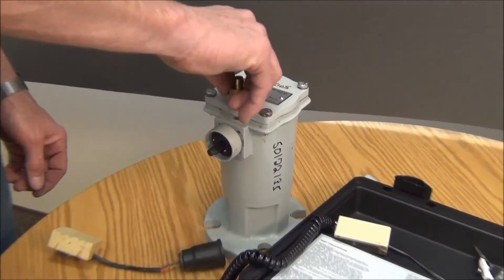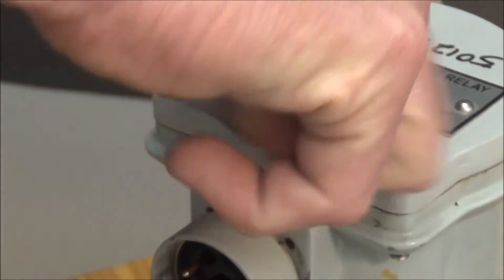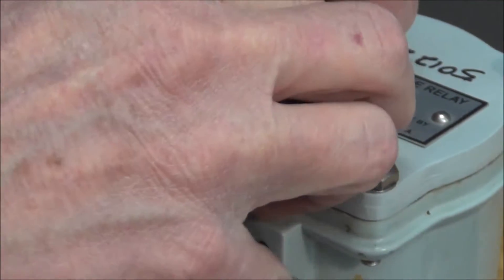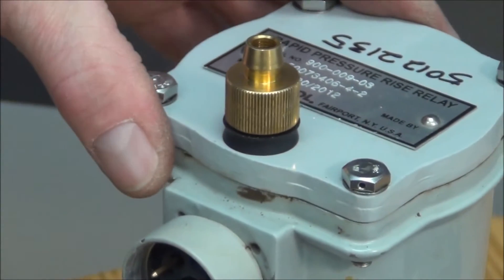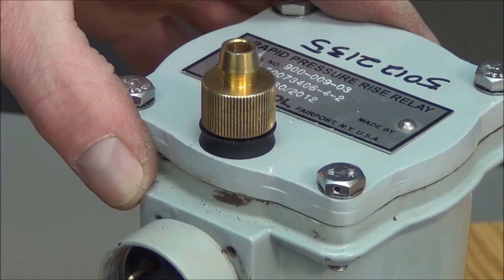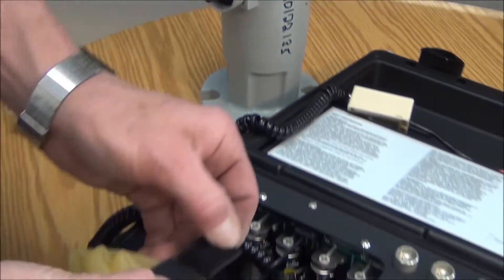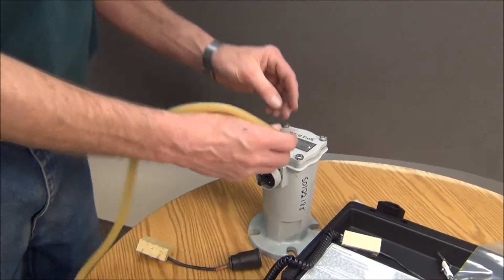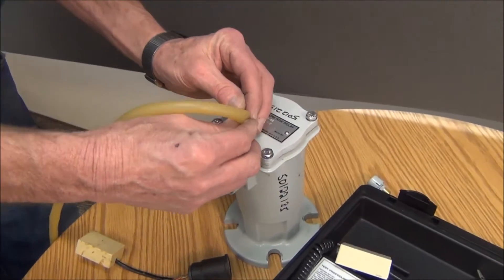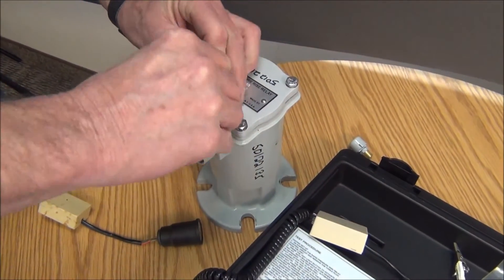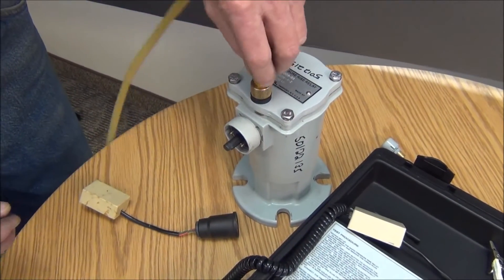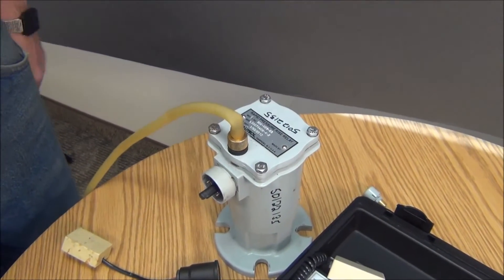This bushing will get threaded into the cover. Usually hand tight is sufficient, but you may have to use pliers to really tighten it down. The next step is to hook up the plastic tubing that will pressurize the top of the unit. Make sure you get the tubing all the way down on the bushing so there's no leaks.